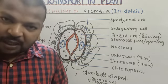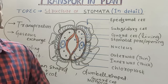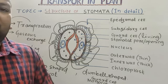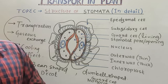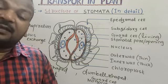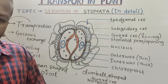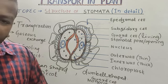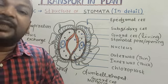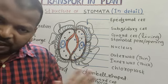Because guard cell has chloroplasts, it can photosynthesize itself — it can synthesize its own food. Hence, guard cell is both living and autotrophic.